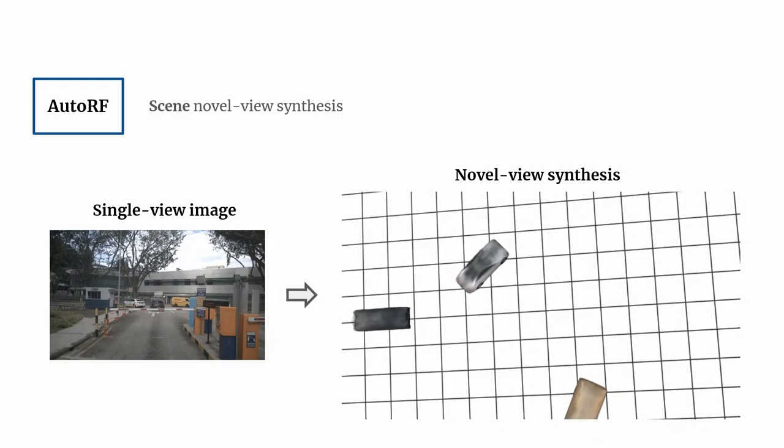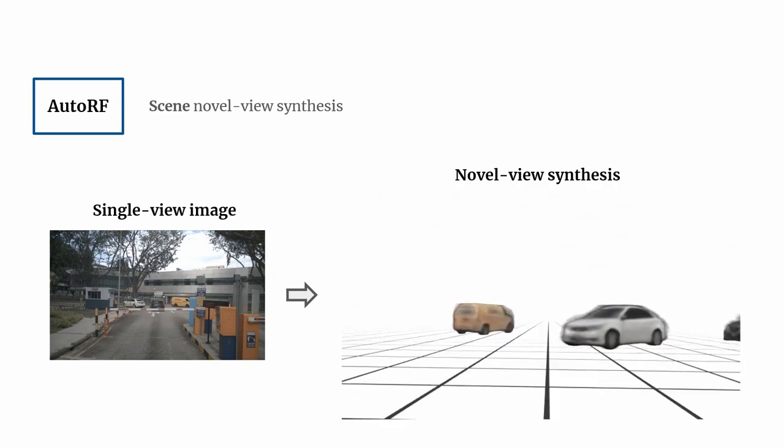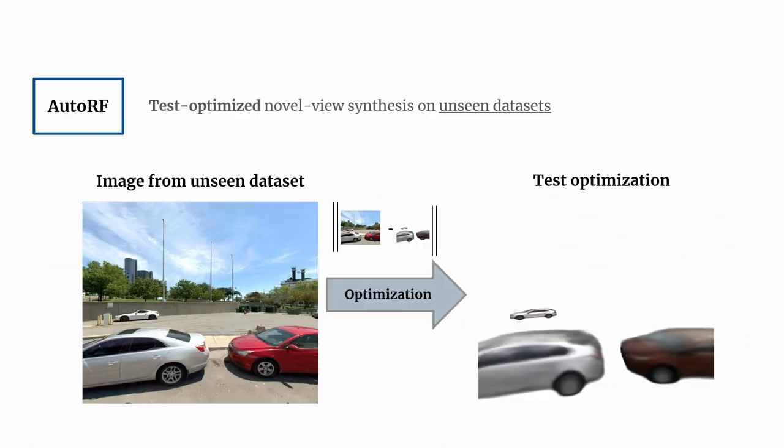AutoRF is able to synthesize complex scene compositions from arbitrary camera poses. Via test time optimization, AutoRF can pick up details in shape and appearance and even fit to new datasets with different camera and scene settings.